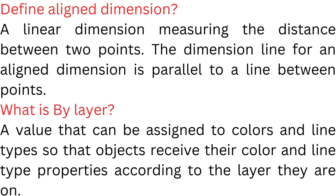Define Aligned Dimension. A linear dimension measuring the distance between two points. The dimension line for an aligned dimension is parallel to a line between the two points.